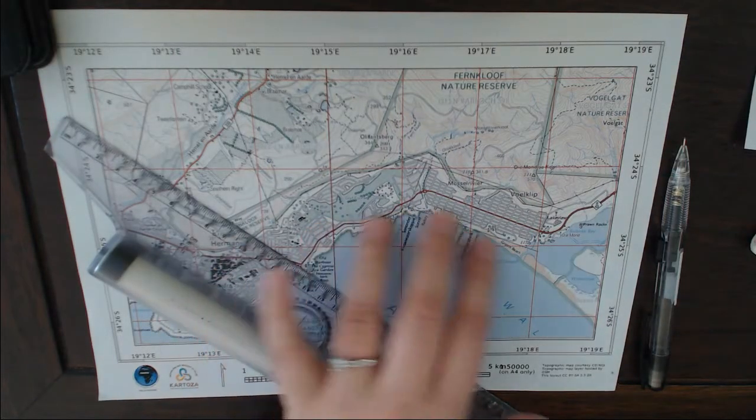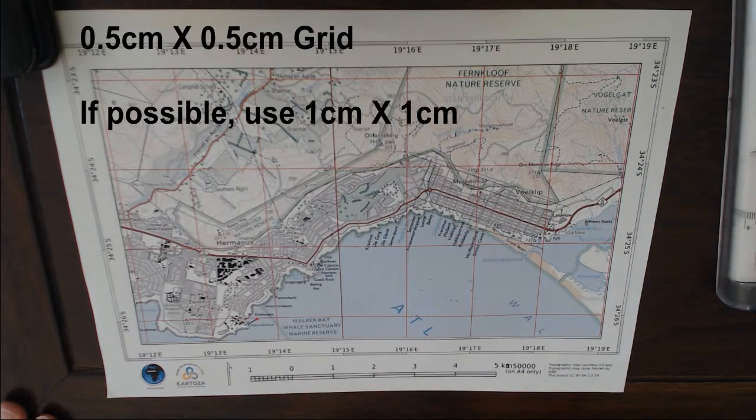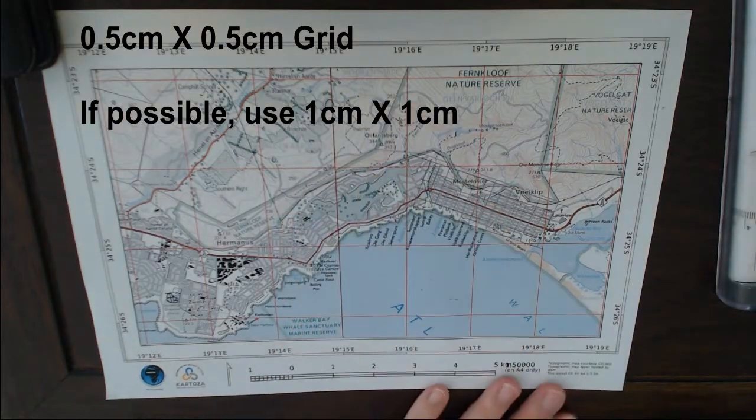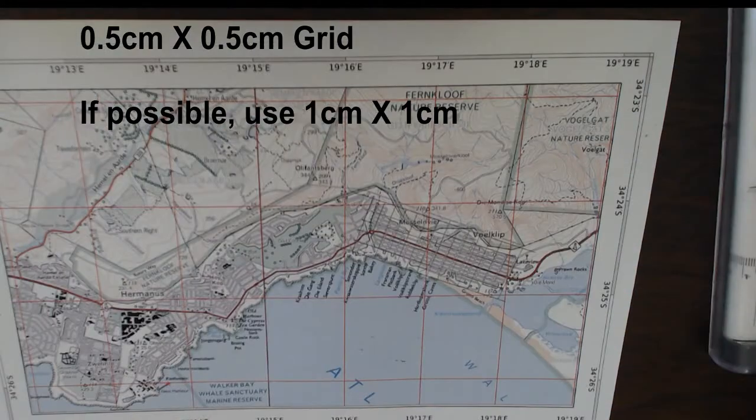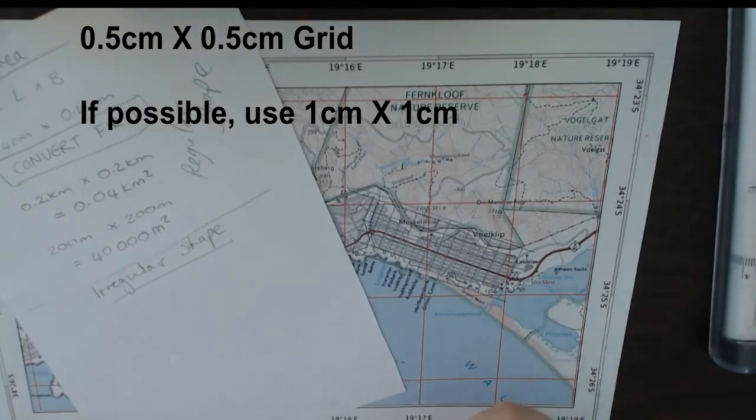I'm drawing a grid around it. Now the grid is in half centimeter measurements, so I've just drawn the big rectangle and now divided it into 0.5 by 0.5 centimeters.